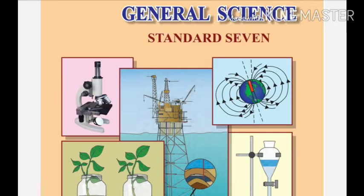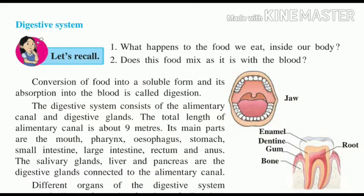What is Mouth Parts? It starts with the digestive system. What happens to the food we eat inside our body? Does this food mix as it is with the blood? The answer is no — it needs a process. We call that process or system the digestive system. The conversion of the food into a soluble form and its absorption into the blood is known as digestion.